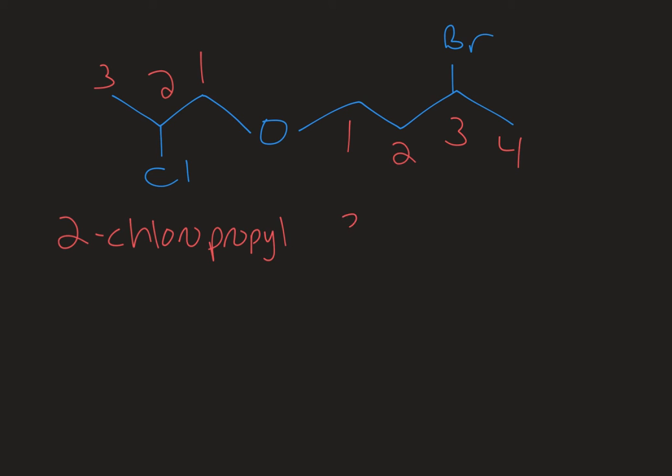And this side over here would be a 3-bromobutyl. So you have a propyl and a butyl chain coming off either side of the ether, and they each have a substituent on them. So you put the substituent in front of the propyl or the butyl.